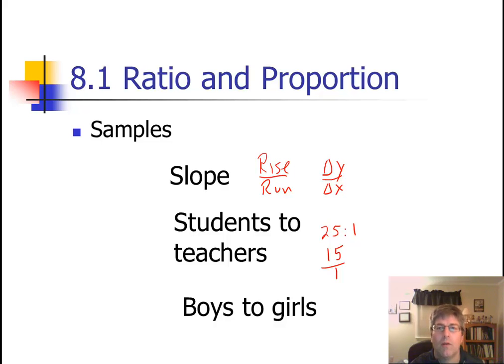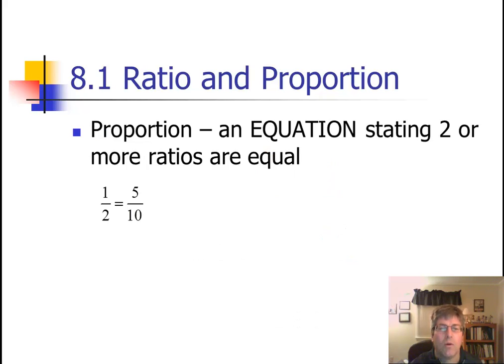Even in your lawn mower or snow blower you may see that the gas and oil mixture is 50 to 1. That means 50 ounces of gas to 1 ounce of oil. That's an example of a ratio.